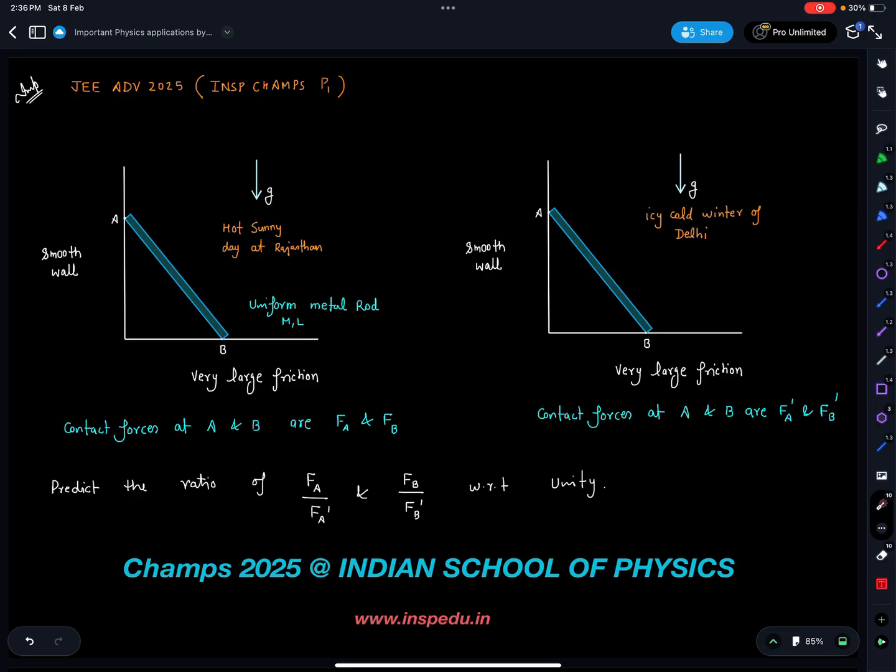So here, there is a rod which is leaning against a wall. The wall is smooth, you can see here the wall is smooth and the ground is having a very large friction. It's a uniform metal rod.